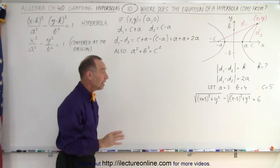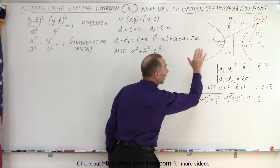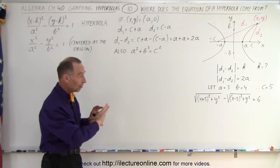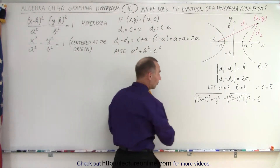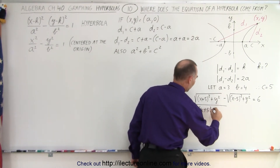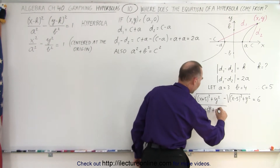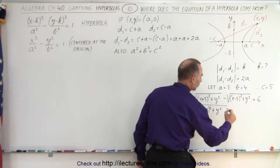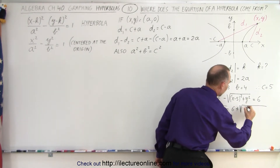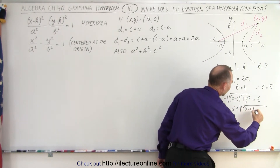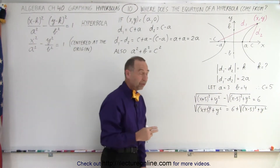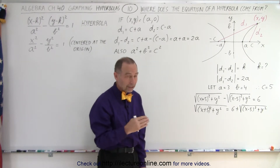This will give us the equation of that particular hyperbola. What we need to do first is separate the radicals. So this becomes the square root of x plus 5 squared plus y squared, equal to 6 plus the square root of x minus 5 squared plus y squared. Now we want to square both sides. Unfortunately we'll still have a radical when we're done with that, so we'll have to do it twice.